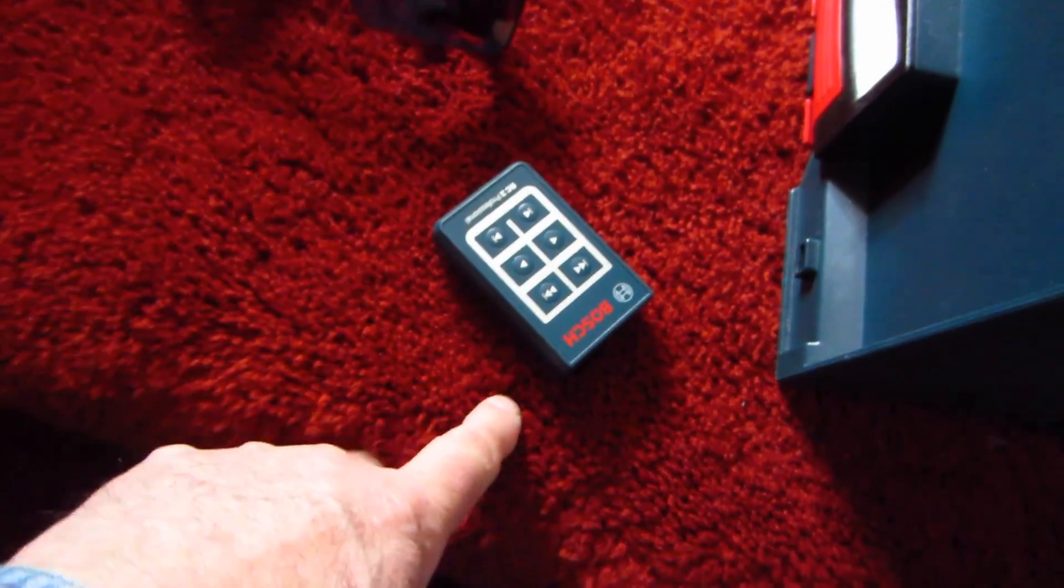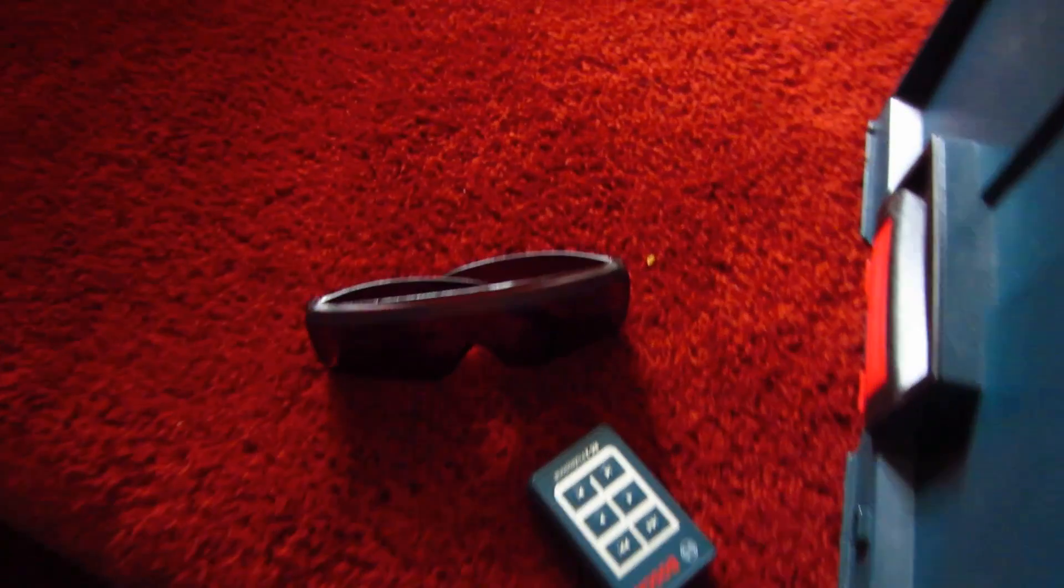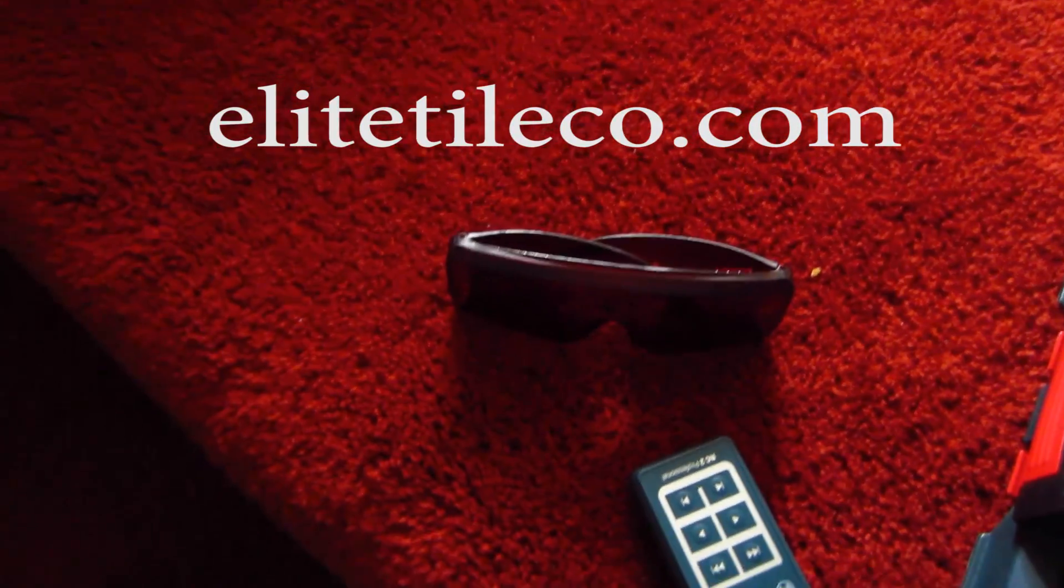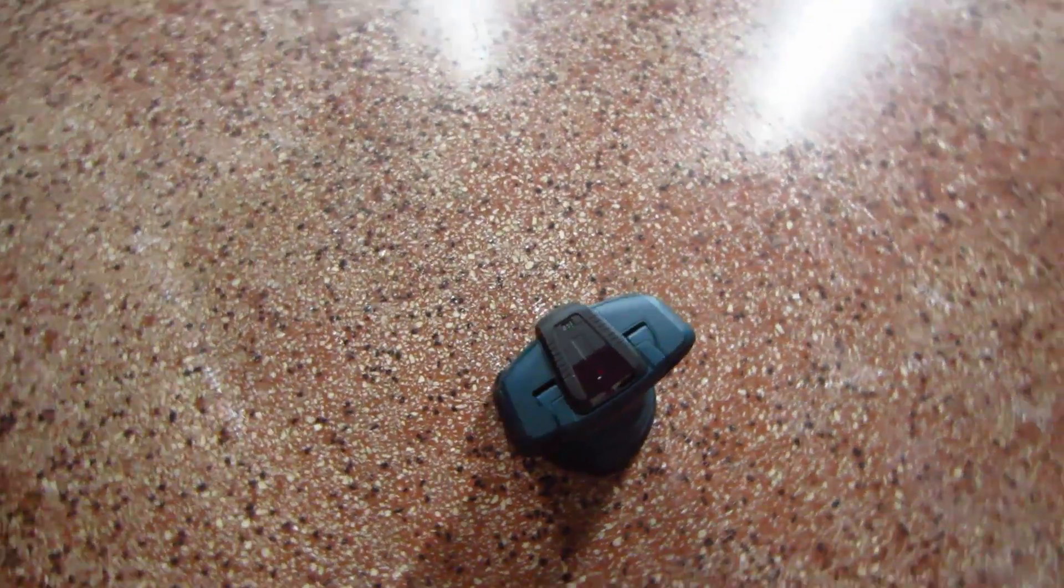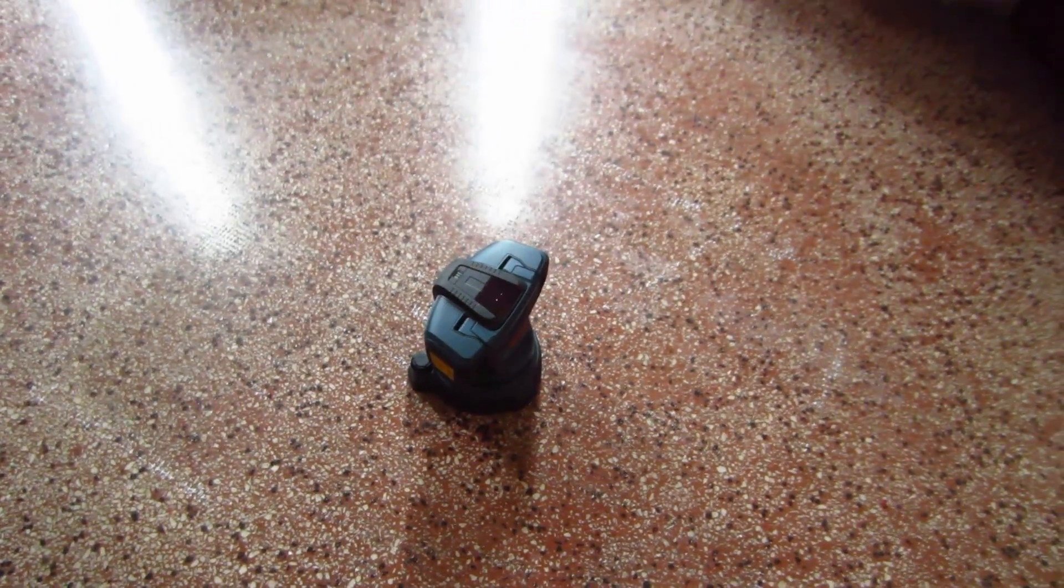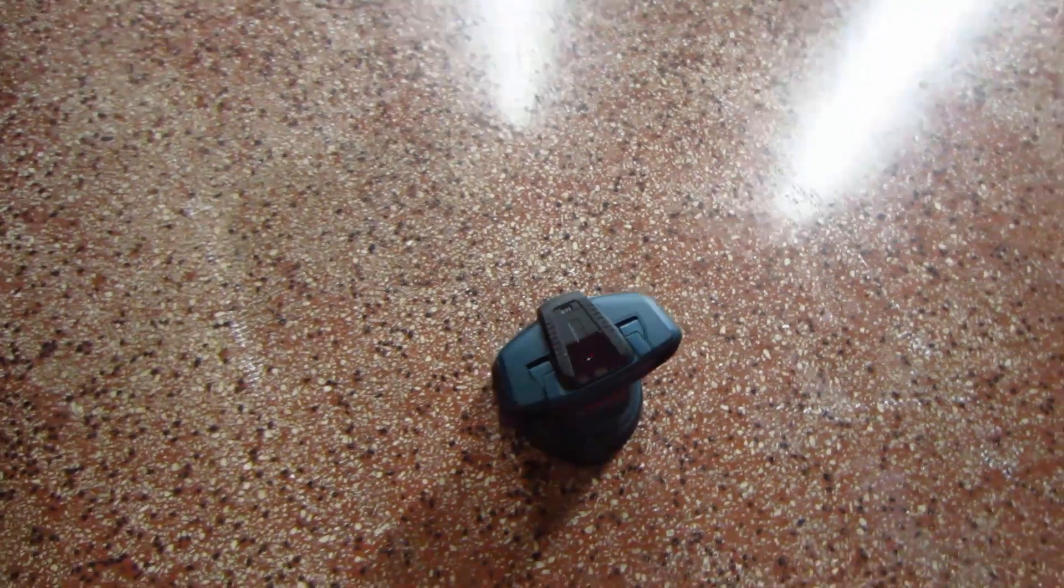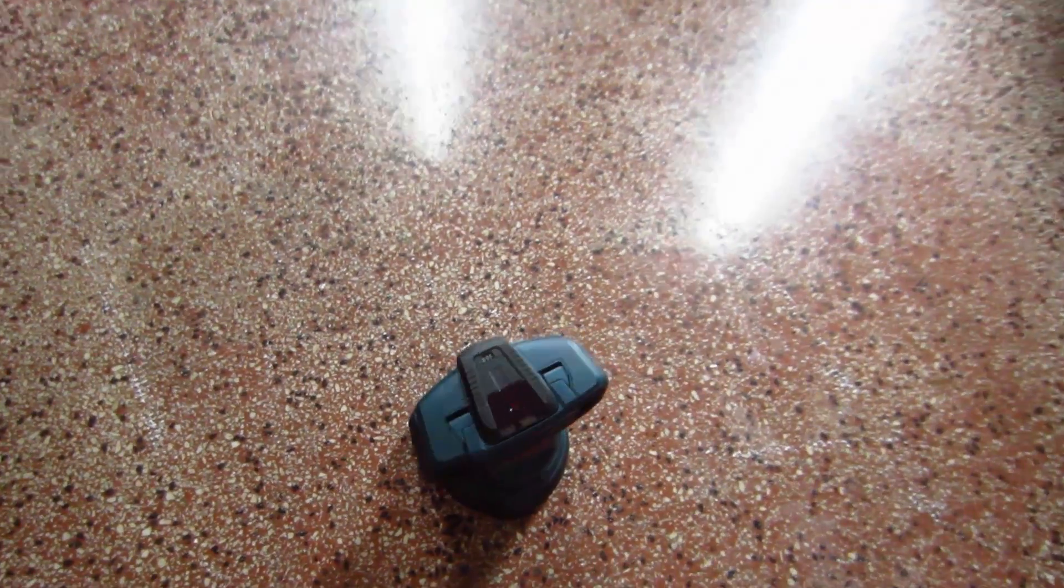So it also comes with a remote control and glasses just in case you need to use it outdoors or if you need it to make the line more visible. This takes either four AA batteries or there's an optional rechargeable battery that can also be inserted. Right now on this one there's four AA batteries.